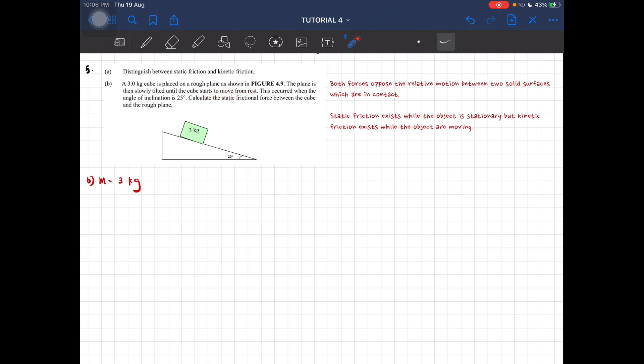The plane is then slowly tilted until the cube starts to move from rest. This occurred when the angle of inclination is 25 degrees. Calculate the static frictional force between the cube and the plane. So the information that we have is the mass 3 kilogram, initial velocity 0 meter per second, and theta equal to 25 degrees.